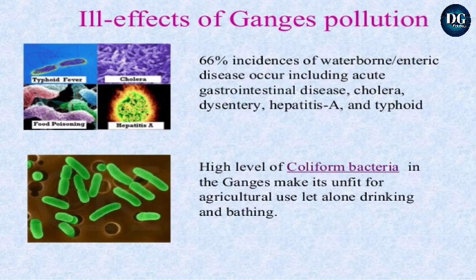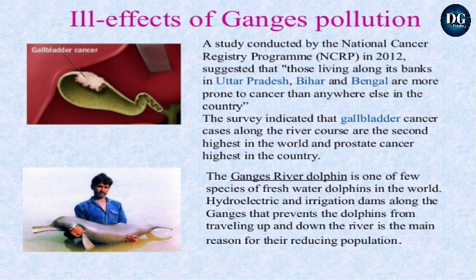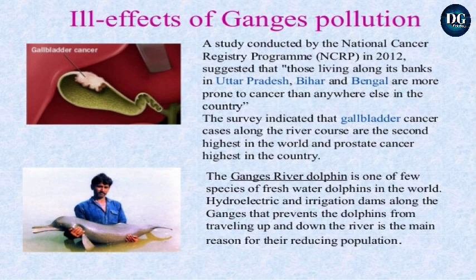High levels of coliform bacteria in the river Ganga make it unfit for agriculture use, let alone drinking. A study conducted by the National Cancer Registry Program in 2012 suggested that those living along its banks in Uttar Pradesh, Bihar, and Bengal are more prone to cancer than anywhere else in the country. The survey indicated that gallbladder cancer cases along the river course are the second highest in the world, and prostate cancer the highest in the country.